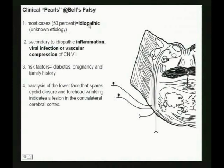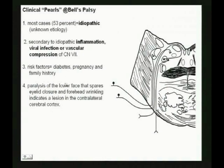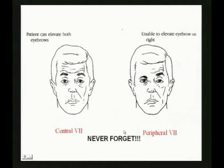He tastes nothing — cranial nerve 7. Bell's palsy: unknown etiology, idiopathic. We don't know why this happens — it could be inflammation or vascular compression. Diabetes seems to be a risk factor. With a Bell's palsy, you cannot wrinkle your forehead — no way — because this is a lower motor neuron problem. You CAN wrinkle the forehead with a corticobulbar problem, but never with a Bell's palsy.